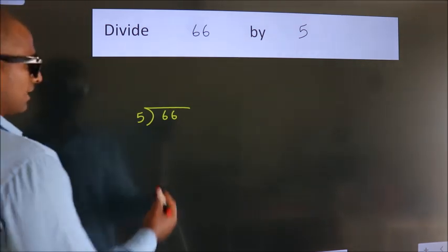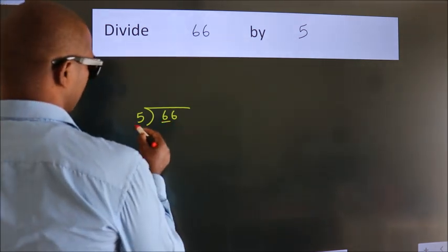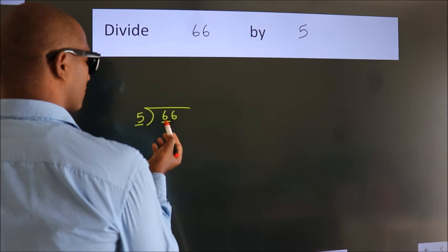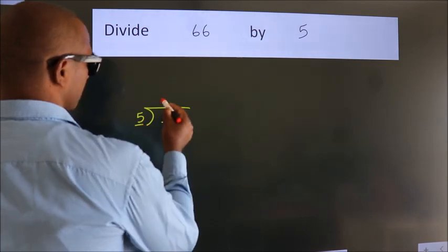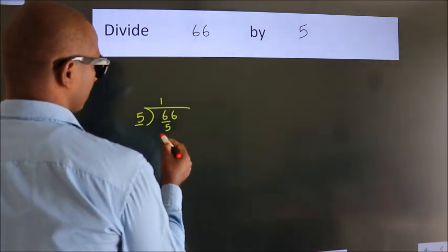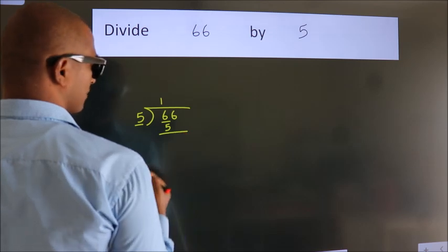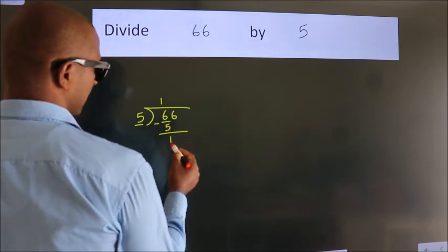Next, here we have 6, here 5. A number close to 6 in the 5 table is 5 once 5. Now we should subtract. We get 1.